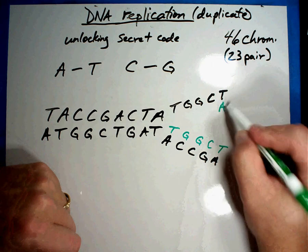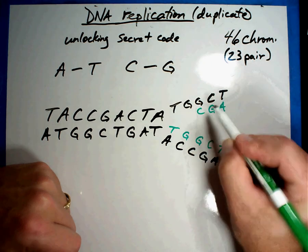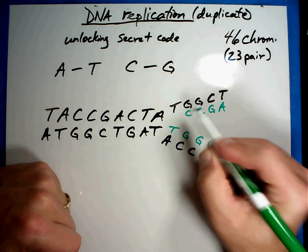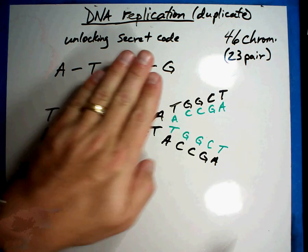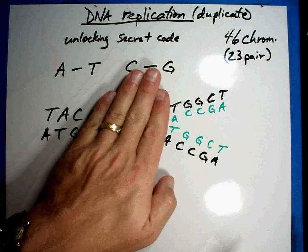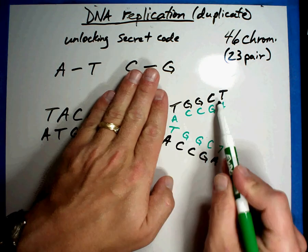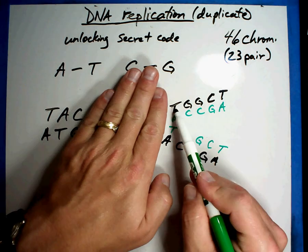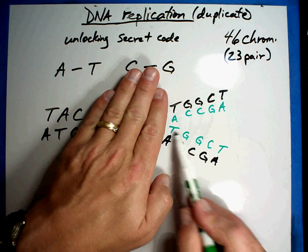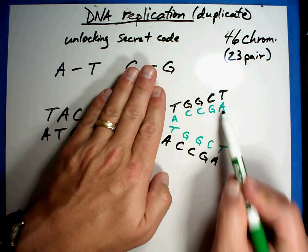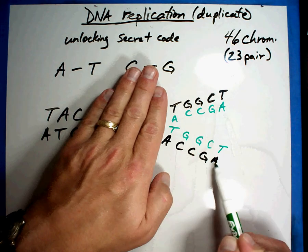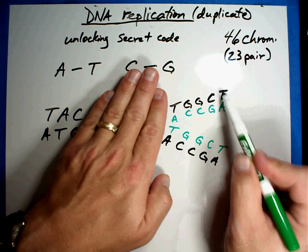The same thing happens here. A goes with T, G goes with C, C goes with G, C goes with G, A goes with T. And so they just plug on. Now you'll notice if I cover up my DNA right here, it's exactly the same from here to the end. T, G, G, C, T. T, G, G, C, T. A, C, C, G, A. A, C, C, G, A. They're exactly the same. You're duplicating your DNA.